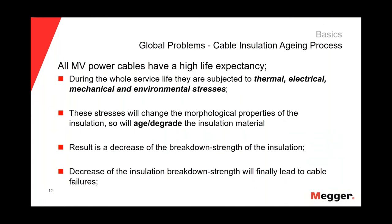To understand the aging process of the cable, we need to understand that today all medium voltage power cables have a high life expectancy — around 50 years. But during the whole service life, they are subject to thermal, electrical, mechanical, and environmental stresses. These stresses will change the morphological properties of the insulation, aging and degrading the insulation material. The result is a decrease of the breakdown strength of the insulation, which will finally lead to cable failures.